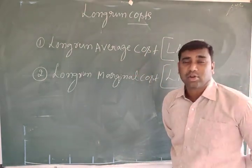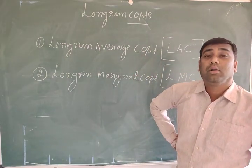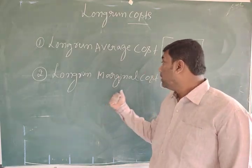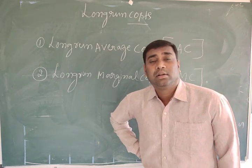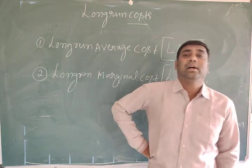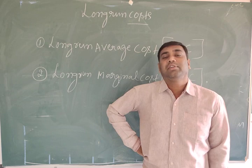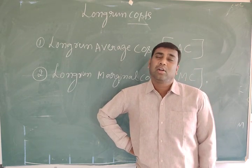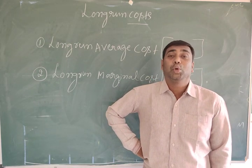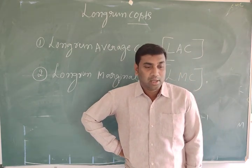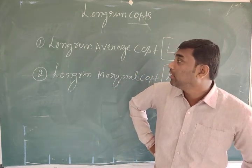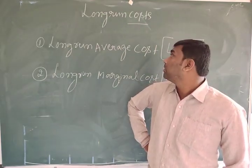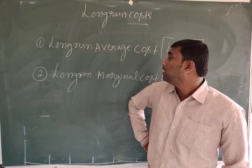Average cost is the cost of total production. Marginal cost is the cost of production of an extra unit of a commodity — it is the addition to the total cost when one more unit is produced. We can explain this with the help of a diagram, observing the shapes of long-run average cost and long-run marginal cost.